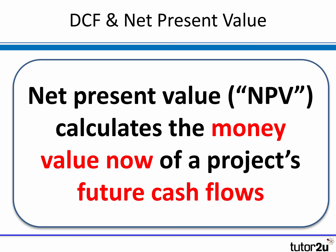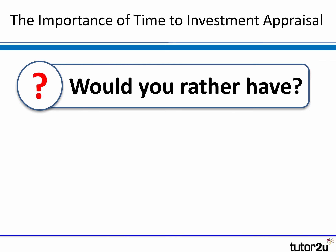Let's move on to DCF. Net present value, or NPV, tries to calculate and add up the money value now of all the future cash flows of a project. Why is time important? Why do we want to work out the value now of future cash flows?